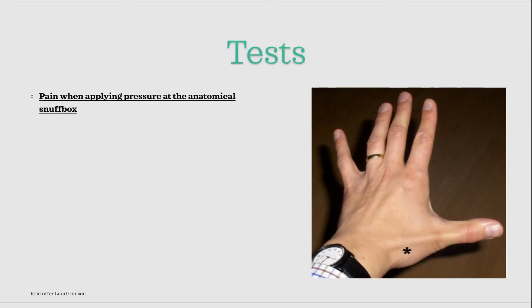When a trauma has occurred, a full orthopaedic examination should be performed. The test I will be explaining here will be focused on scaphoid fractures specifically. A classical sign of scaphoid fracture is that when you apply pressure to the anatomical snuffbox — the location can be seen here on the picture — it will be quite painful for the patient. When positive, the patient should be treated as a scaphoid fracture until proven otherwise.